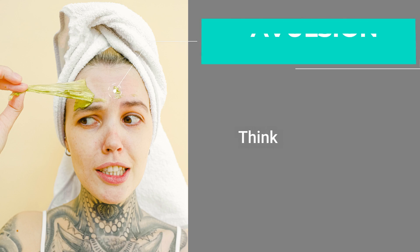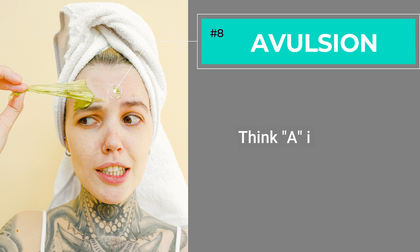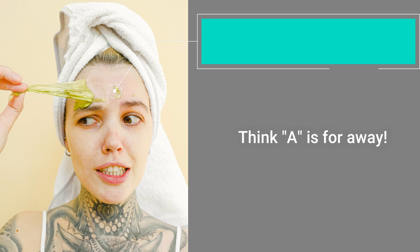We are on number eight. Our eighth injury is avulsion. The description is tissue is torn away or separated. The emphasis is on 'away' — the A. Avulsion, away — the A and the A go together.